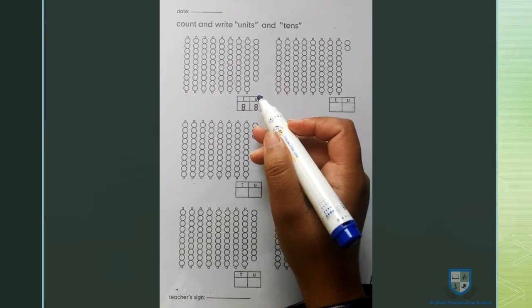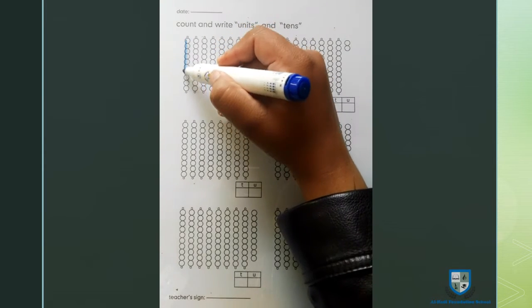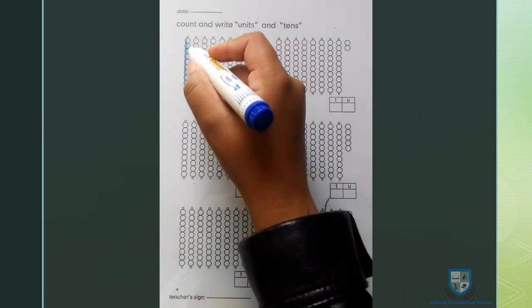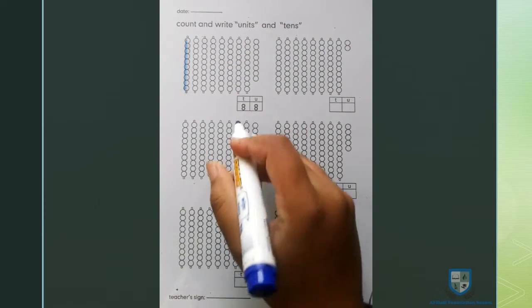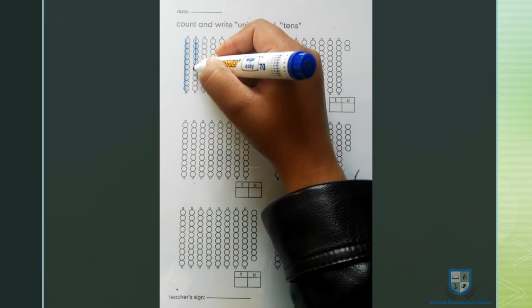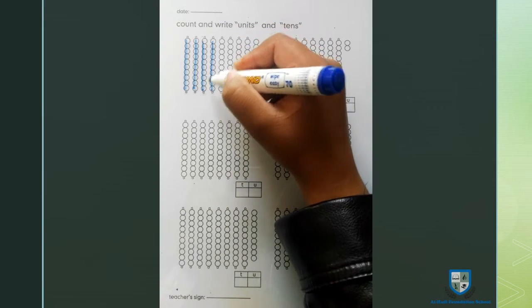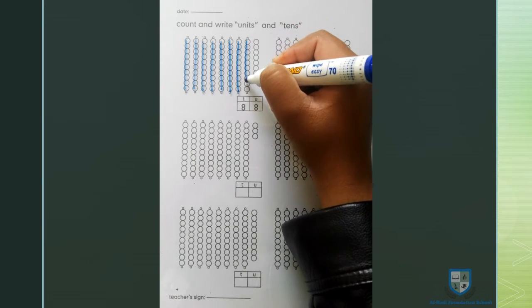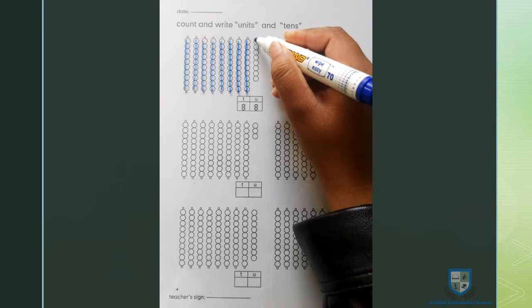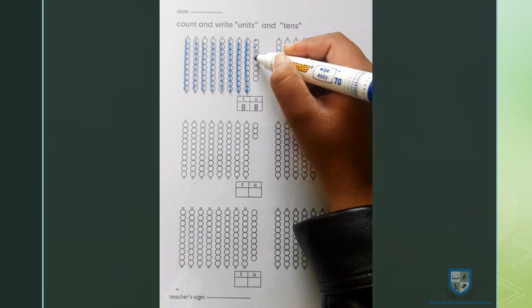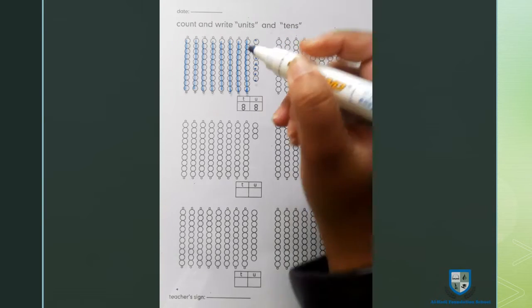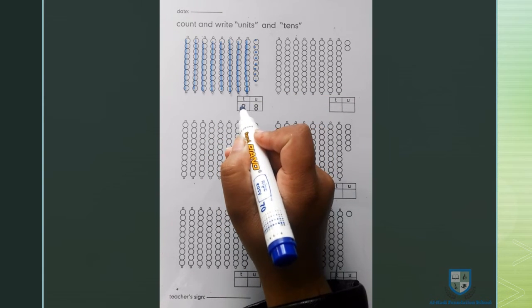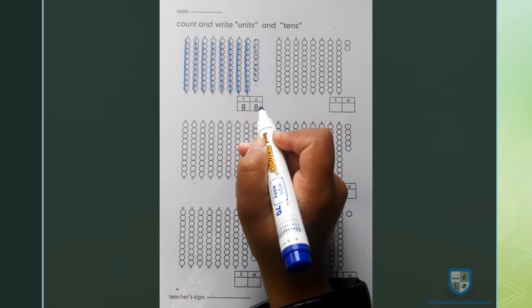we will count these beads with tens. We will count these beads with 10 beads. 10, 20, 30, 40, 50, 60, 70, 80, 1, 2, 3, 4, 5, 6, 7, 8. 88. 88 में 8 tens हैं और 8 units हैं.